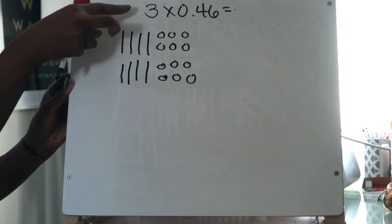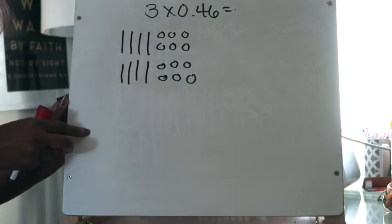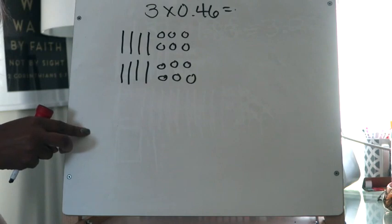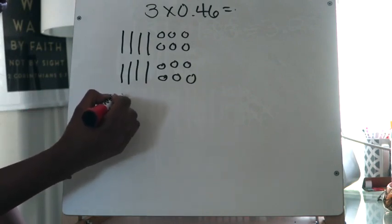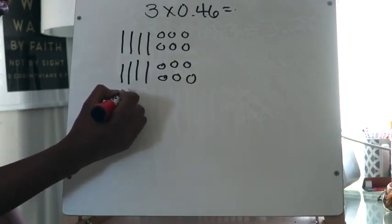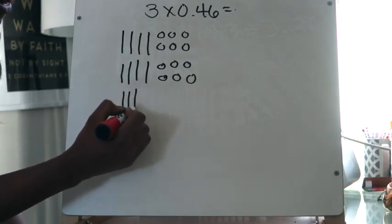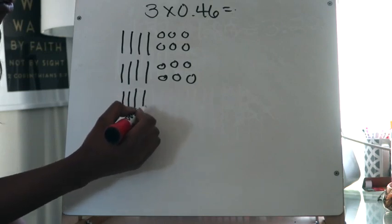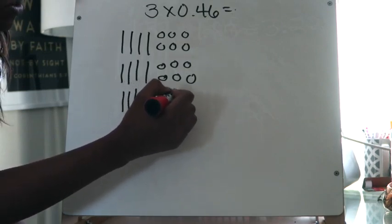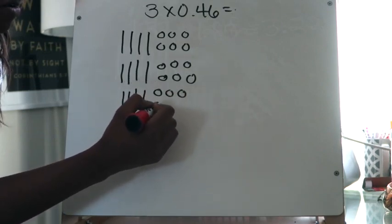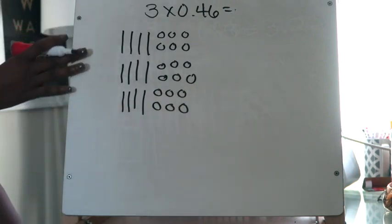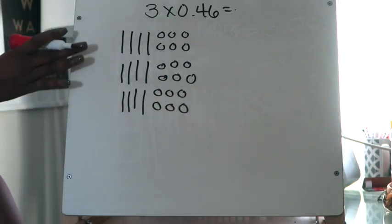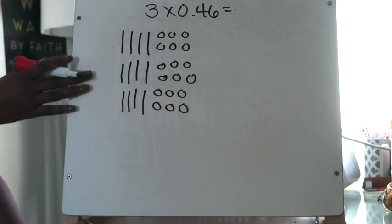I need three groups of 46 hundredths because my problem is 3 times 46 hundredths, so I make one more group: four tenths and six hundredths. Here I have three groups of 46 hundredths. Remember, multiplication is just repeated addition as long as you're adding the same thing.